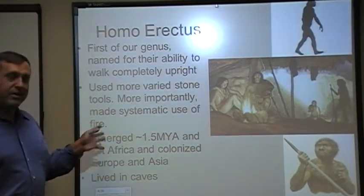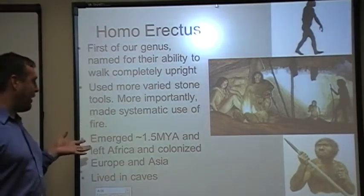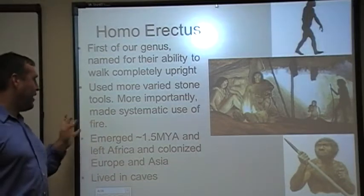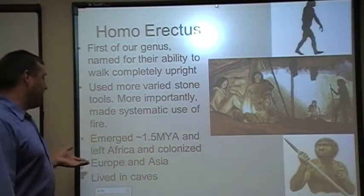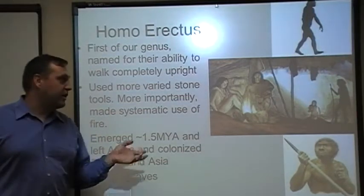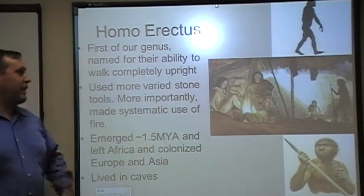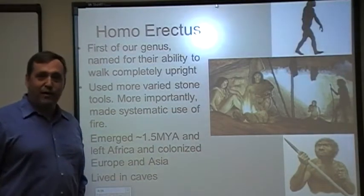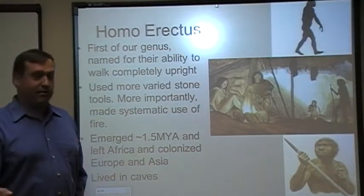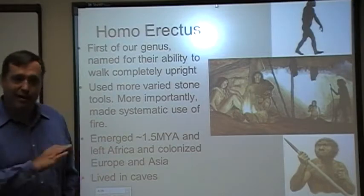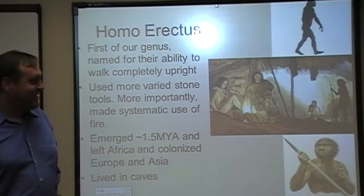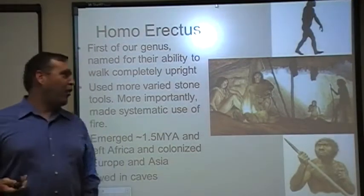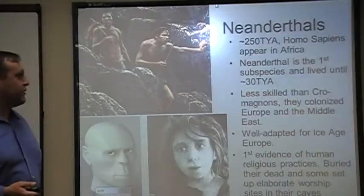These guys emerge something like 1.5 million years ago, and they're going to leave Africa and colonize Europe and Asia. A pretty accurate term to use for these guys would be cave men, cave women — cave people — because they tend to live in caves for shelter.